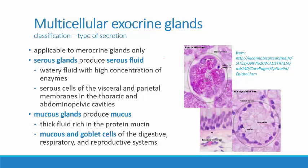The last thing we're going to talk about is two kinds of glands classified by the type of secretion they produce — and both are merocrine glands only. Serous glands produce serous fluid — we've talked about this already: pericardial fluid, pleural fluid, and peritoneal fluid. Serous glands produce a very watery fluid with a high concentration of enzymes. The serous cells are found in the visceral and parietal membranes of the thoracic and abdominopelvic cavities, and they release by merocrine secretion.